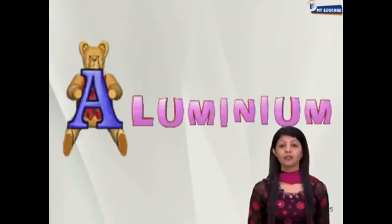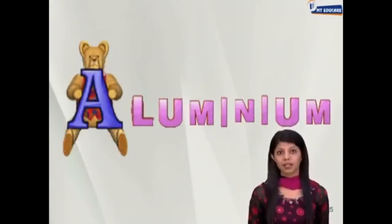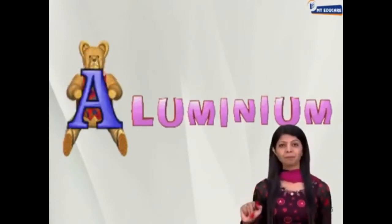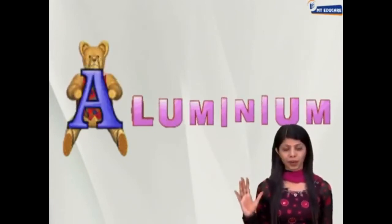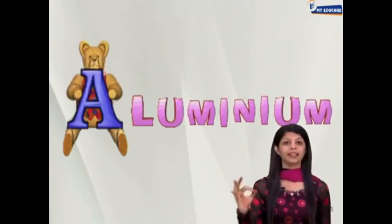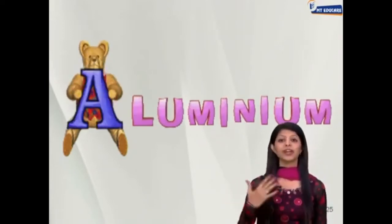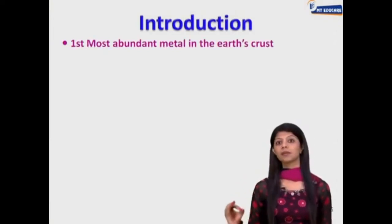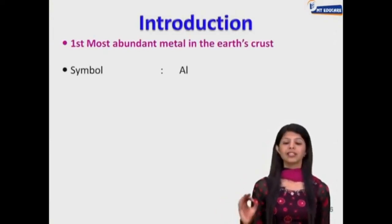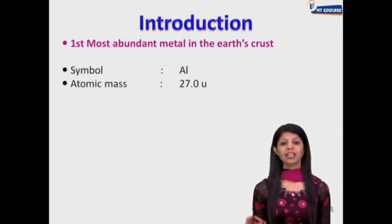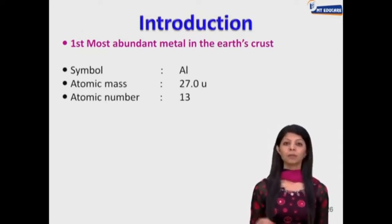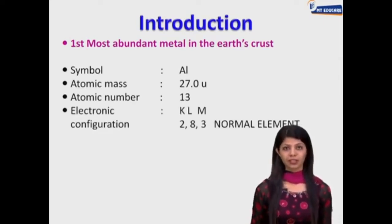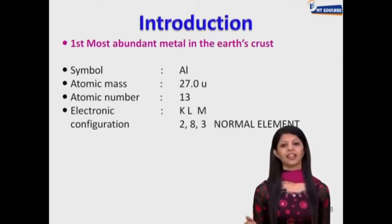Students, we are going to study a very important five mark answer: extraction of aluminium metal. In the reactivity series, quickly recap: K, Na, Mg, Al — aluminium is the last highly reactive metal. Now a quick introduction: aluminium is the most abundant metal in the earth's crust. Its symbol is Al, atomic mass is 27 Daltons, atomic number is 13, and its electronic configuration is 2, 8, 3.